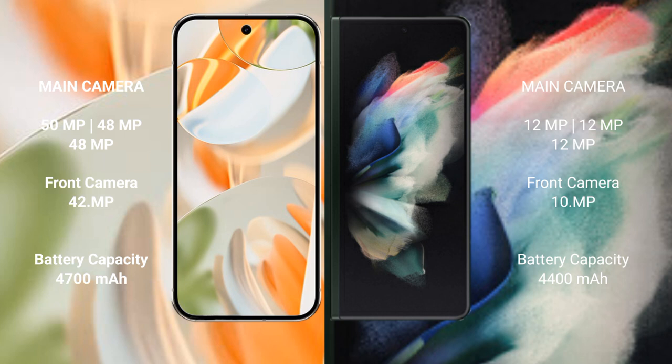Google Pixel 9 Pro has a 4600mAh battery with 27W fast charging support. Samsung Galaxy Z Fold 3 has a 4400mAh battery with 25W fast charging support.